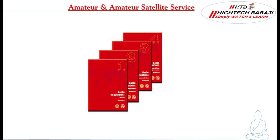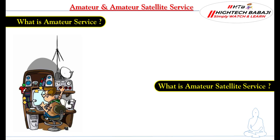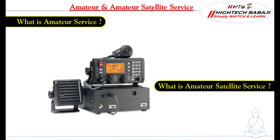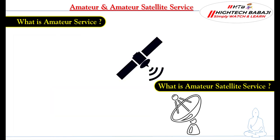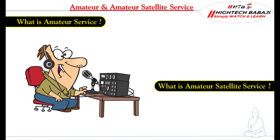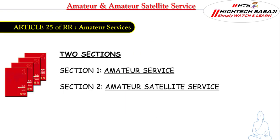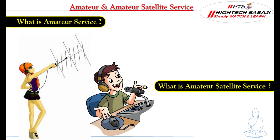Now, the Amateur Services and Amateur Satellite Services are mentioned in Article 25 of the Radio Regulation. Article 25 consists of two sections: Section 1 is Amateur Service and Section 2 is Amateur Satellite Service. We will now discuss these in detail.